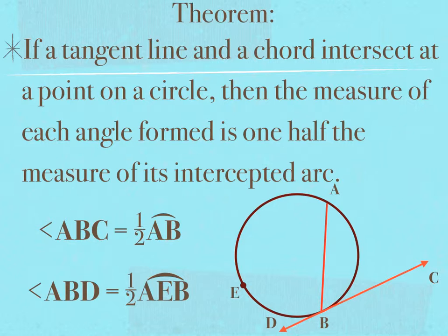Now remember that to name minor arcs, I used two points on the arc, and to name a major arc, I used three points on the arc. So arc AB would be a minor arc, and arc AEB would be a major arc.